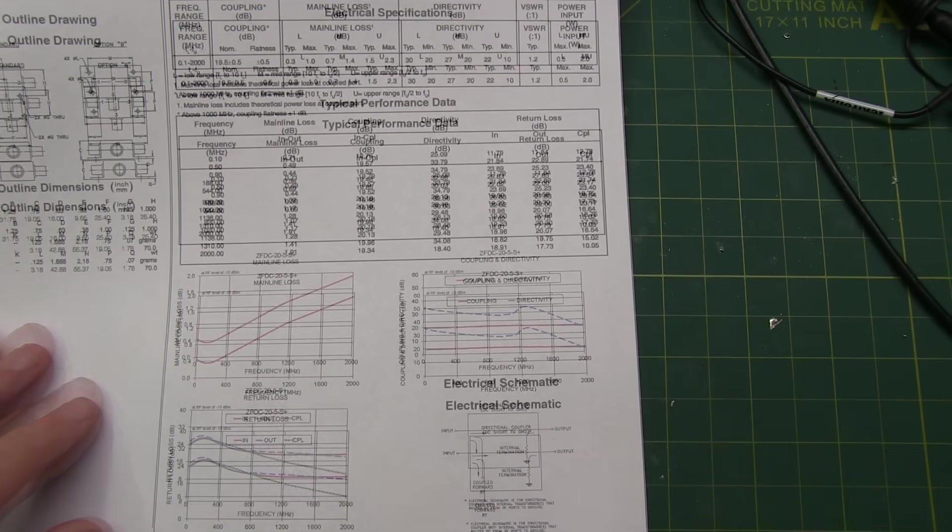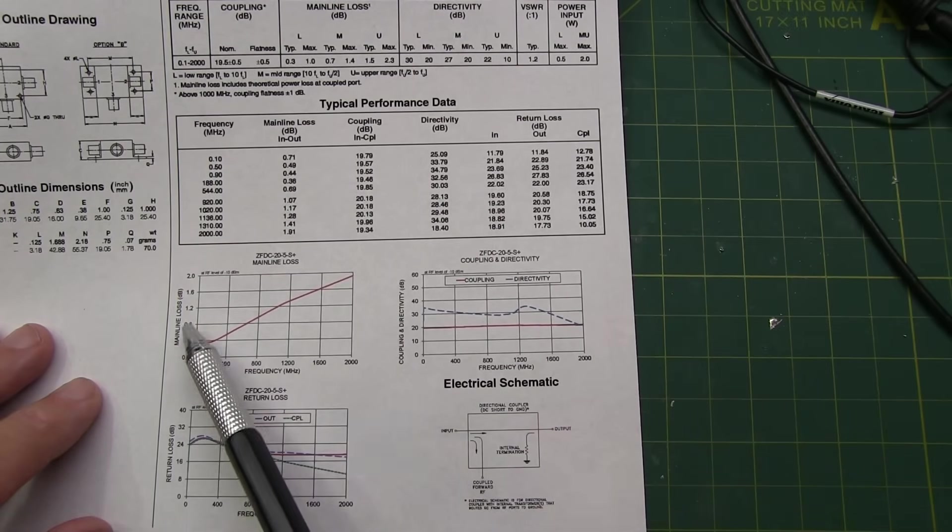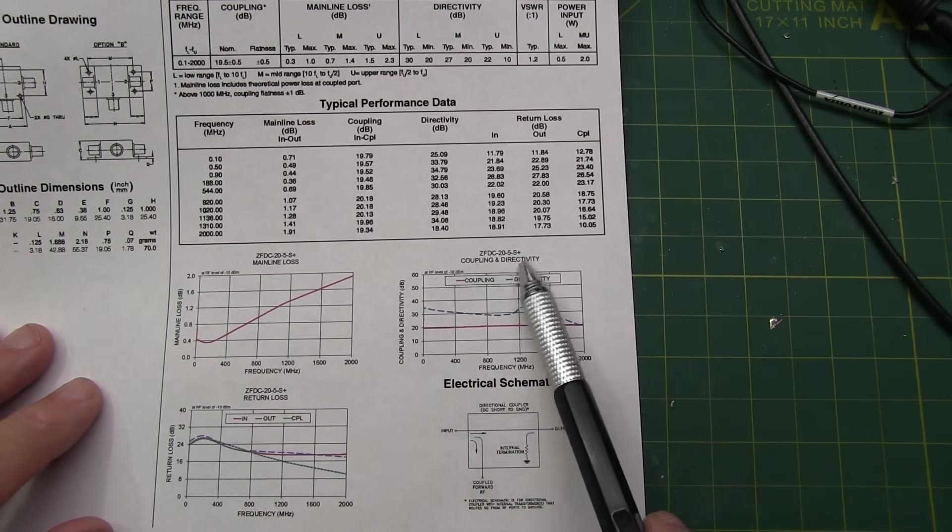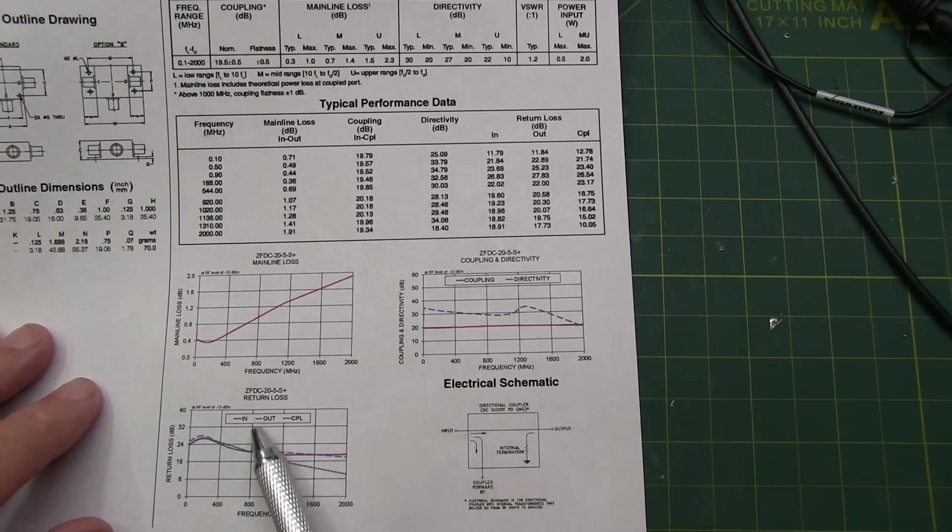And of course, the plots down here will plot the mainline loss, coupling and directivity on one plot here, and then the return loss on another plot here, to give us an idea of how these parameters ought to vary with frequency. So we'll see if our results coincide or come close to what these look like.